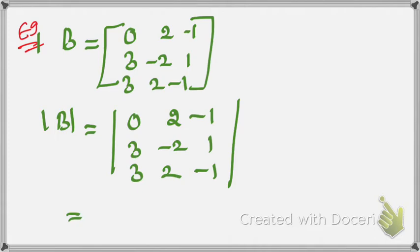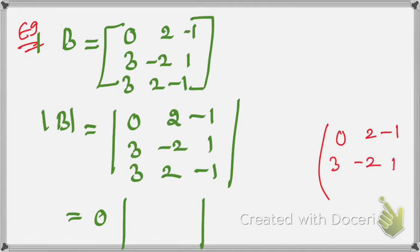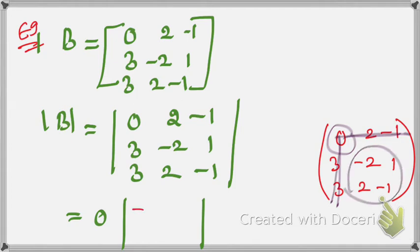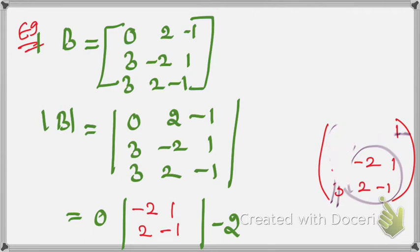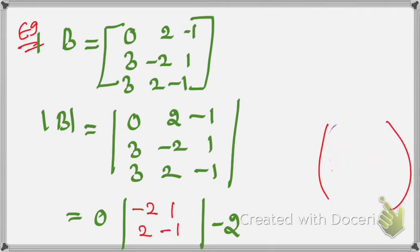Taking the first row for expansion with alternating signs plus, minus, plus. The first element is 0, giving plus sign. Then minus 2 with minus sign, multiplied by the corresponding 2×2 submatrix. Then minus 1 with plus sign, multiplied by its submatrix. The remaining values after eliminating respective rows and columns are used for each cofactor.